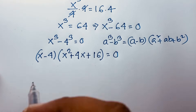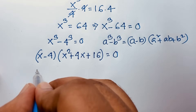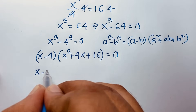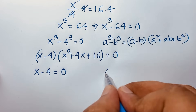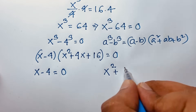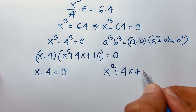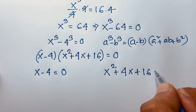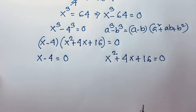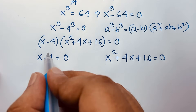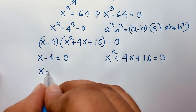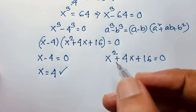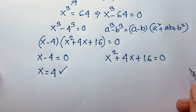Now we have two cases. The first case is x minus 4 equals 0. The second case is x squared plus 4x plus 16 equals 0. From the first case, moving the negative 4 to the other side gives x equals positive 4. This is our real solution in this math problem.